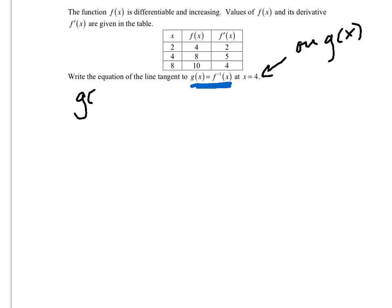So g of x has the ordered pair 4 comma something, which means that f of x has the ordered pair whatever goes in the blank there comma 4.